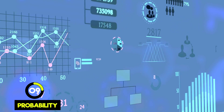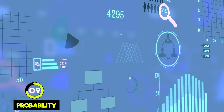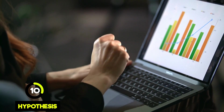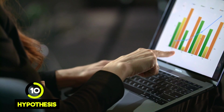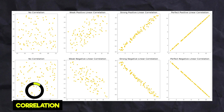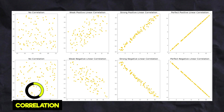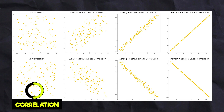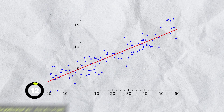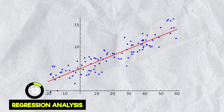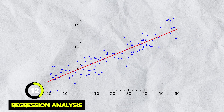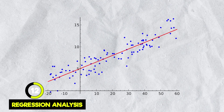Probability is a concept we all know — it's how likely it is that something is going to happen. A hypothesis is the prediction we make about something, and if we test our hypothesis to see if we're correct, it's called hypothesis testing. Correlation is a way to measure how two things move in relation to each other — make sure you don't confuse it with causation, which is whether one thing directly causes the other. Regression analysis is a method used to find the pattern and understand the relationship between a dependent variable and one or more independent variables.